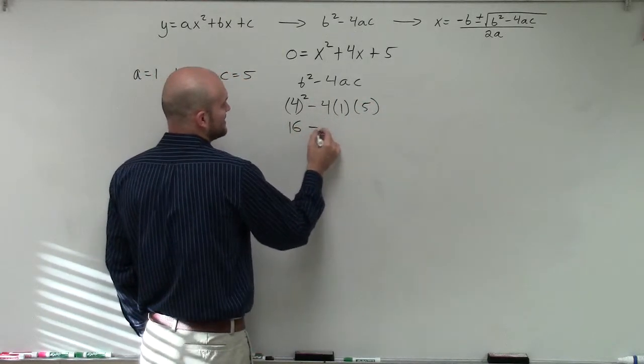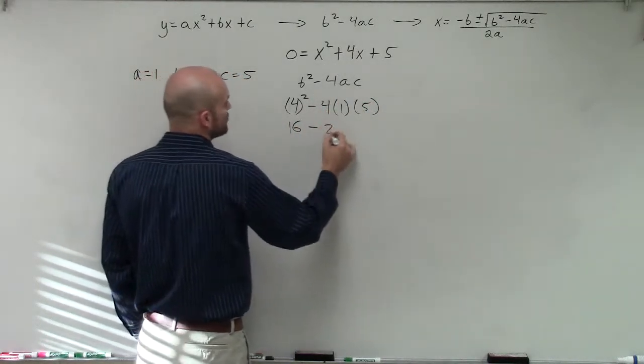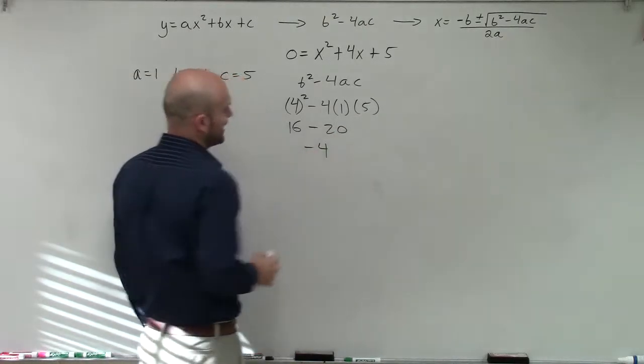Do a little math. 16 minus 4 times 1 times 5 is 20. That equals negative 4.